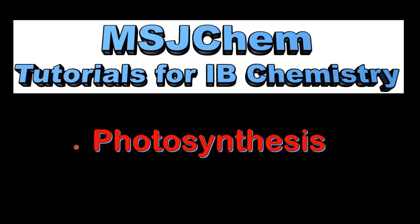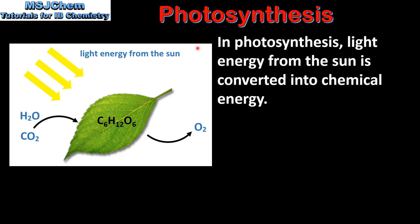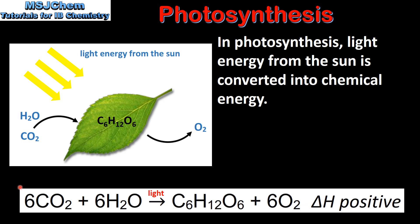This is MSJChem. In this video I'll be looking at photosynthesis. In photosynthesis, light energy from the sun is converted into chemical energy. Here we have the equation for photosynthesis: carbon dioxide reacts with water in the presence of sunlight to form glucose and oxygen.